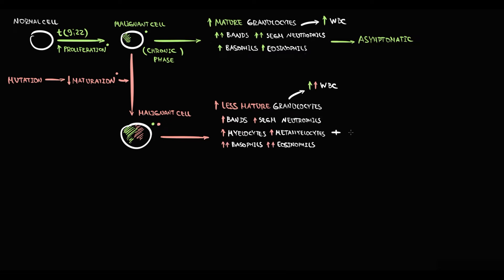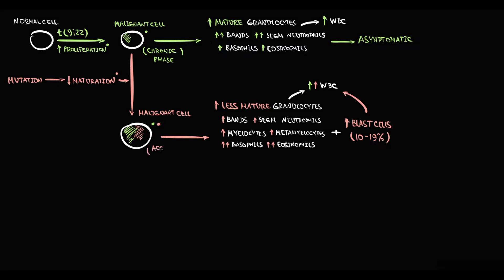Immature blood cells begin to accumulate, and the state when overproduction with progressive accumulation of granulocytes occurs simultaneously with severely disrupted maturation — causing accumulation of blast cells in the bone marrow from 10 to 19% — is called the accelerated phase of chronic myeloid leukemia.